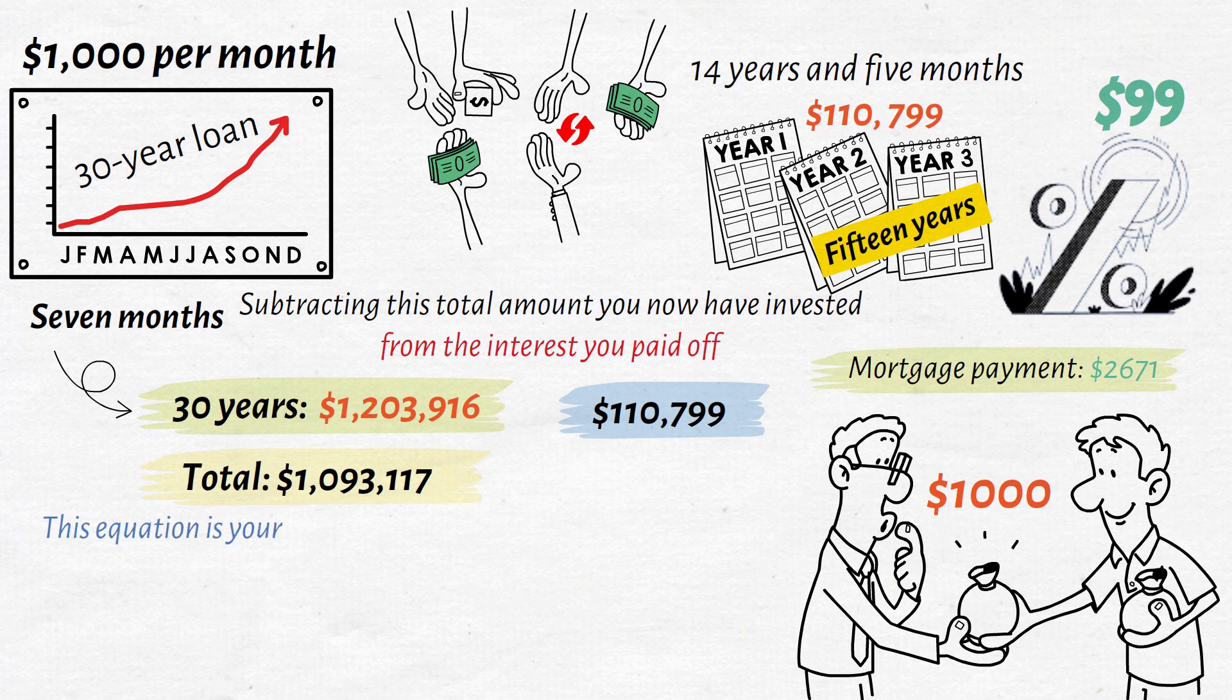Simply put, this equation is your total sum accumulated minus the amount of interest you paid at the end of the 30-year period.